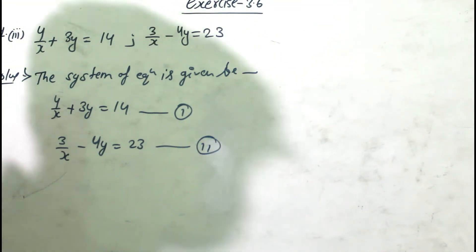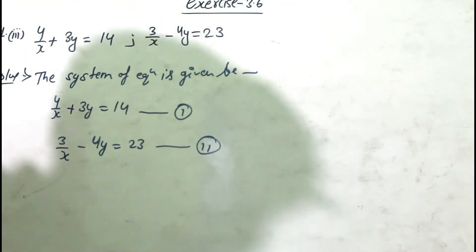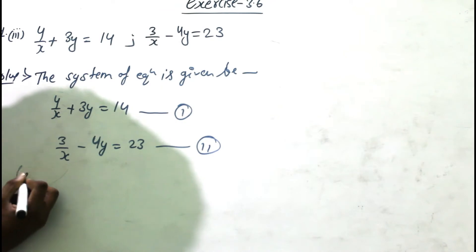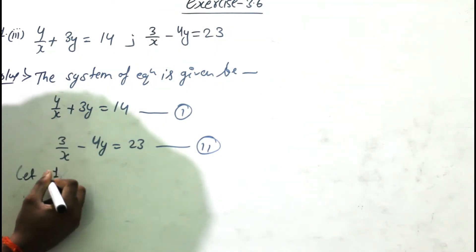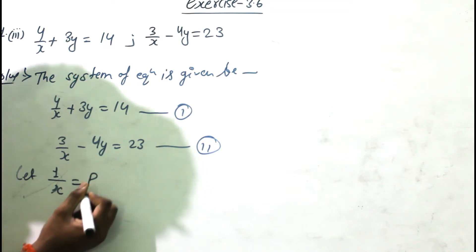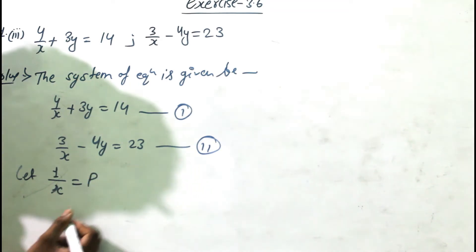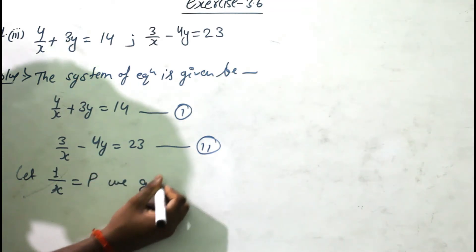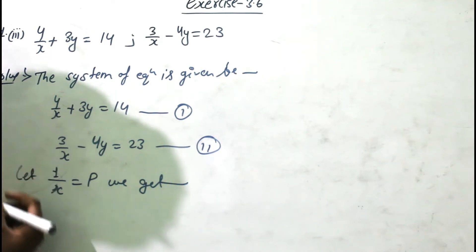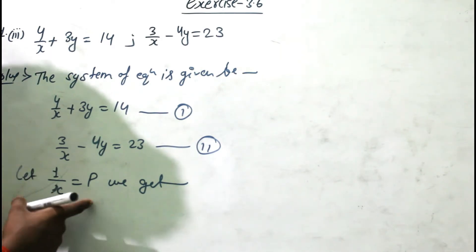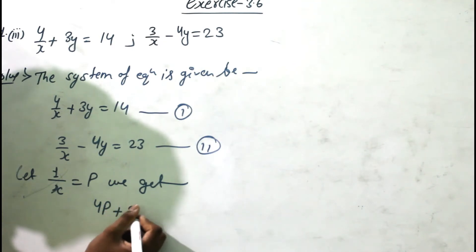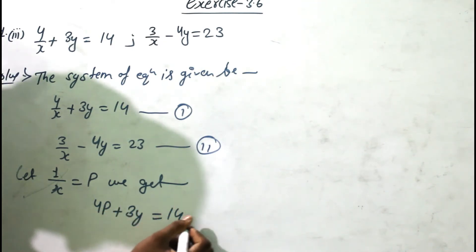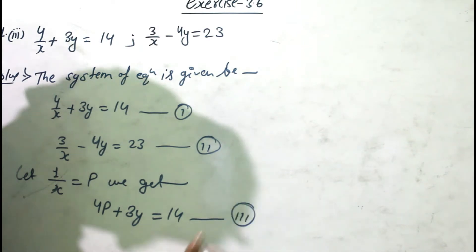So let us assume 1/x = p. In this question, let 1/x = p. Then we get: 4p in place of 4/x, so equation one becomes 4p + 3y = 14. This is our new equation number three.